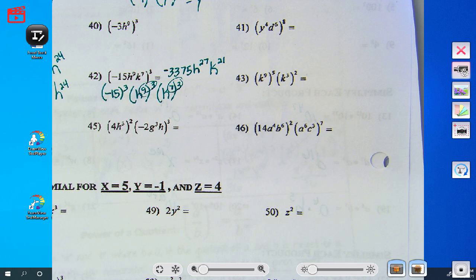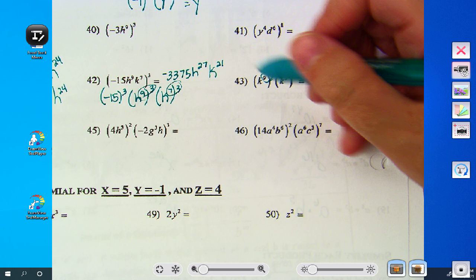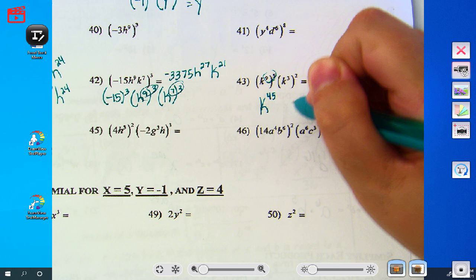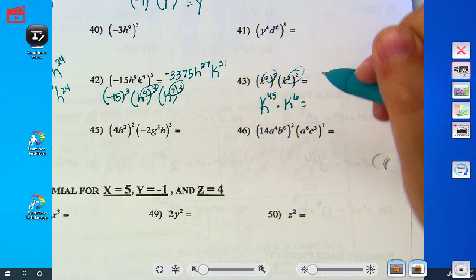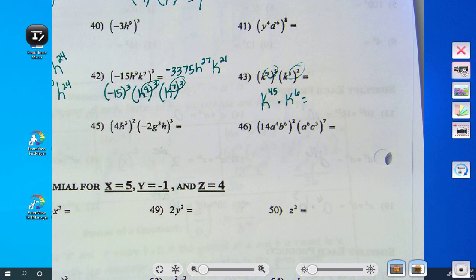Some of them may require more than one step. You may have to use more than one rule in the problem. 43 is an example. Notice how you have to use the power to power rule first. You've got to multiply your exponents. So you've got 9 times 5 is 45, and 3 times 2 is 6. But then I have two like bases. I can't have two of the same base. So what do I have to do with my exponents now, Adam?